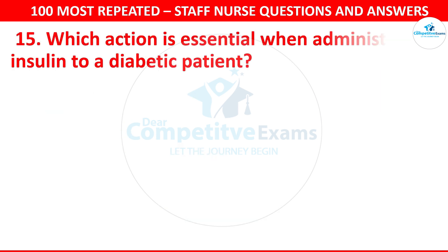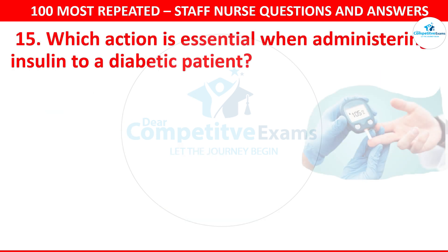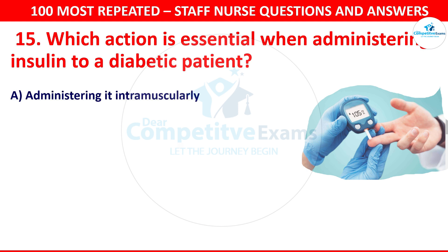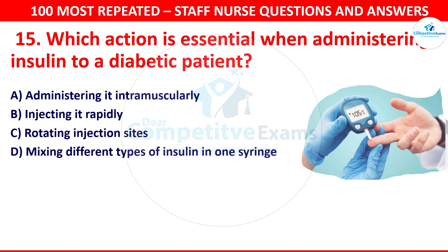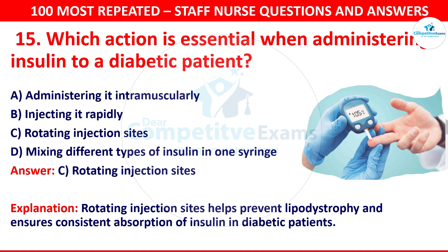Question 16. Which action is essential when administering insulin to a diabetic patient? Your options are administering it intramuscularly, injecting it rapidly, rotating injection sites or mixing different types of insulin in one syringe. The correct answer is rotating injection sites. Rotating injection sites helps to prevent lipodystrophy and ensures consistent absorption of insulin in diabetic patients.